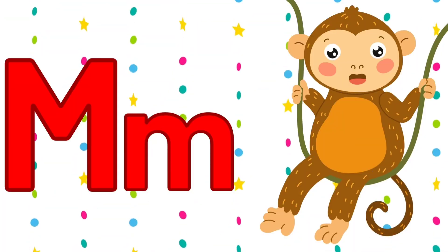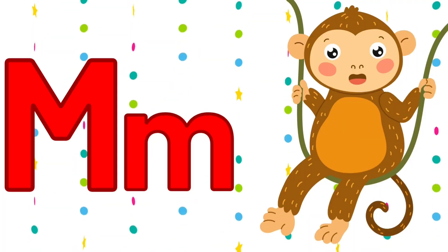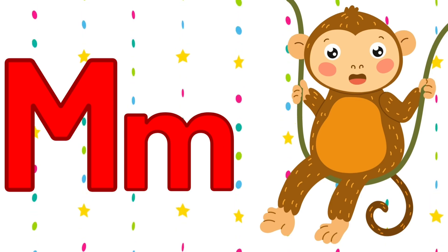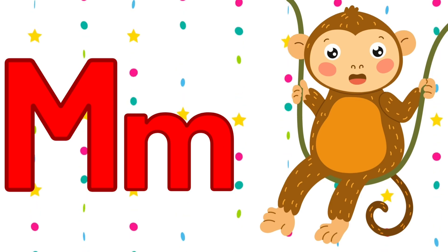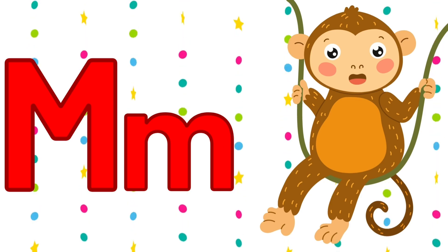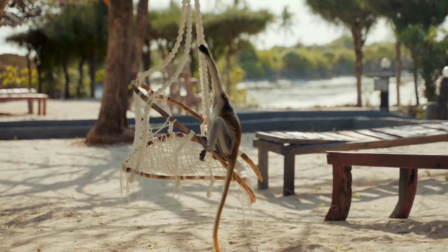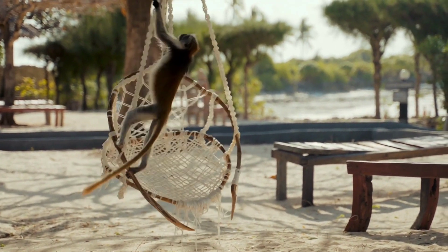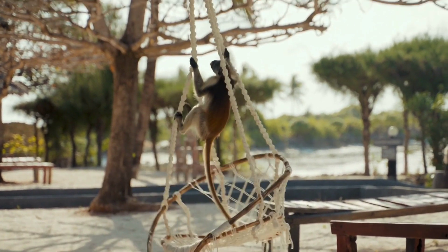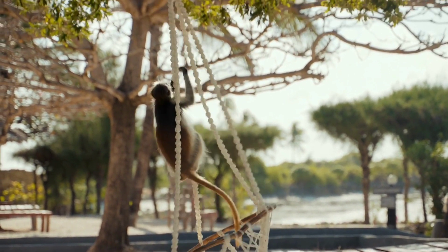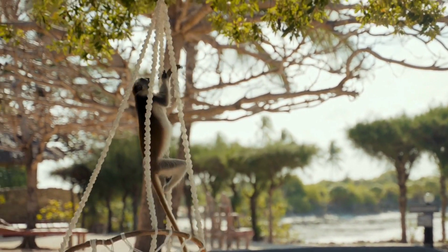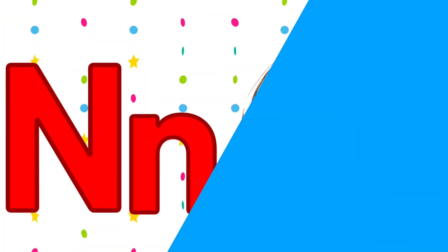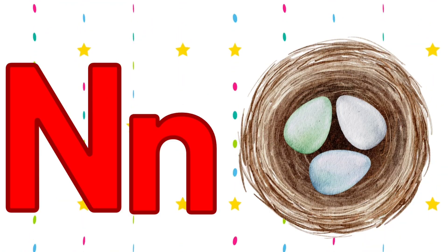M. M is for monkey. Monkey means bander. Its spelling is M-O-N-K-E. Monkey.